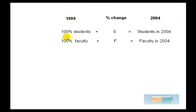You have, well, in 1999, you have this amount of students, this amount of faculty, there's some percent change that happens, and then you get your final result.